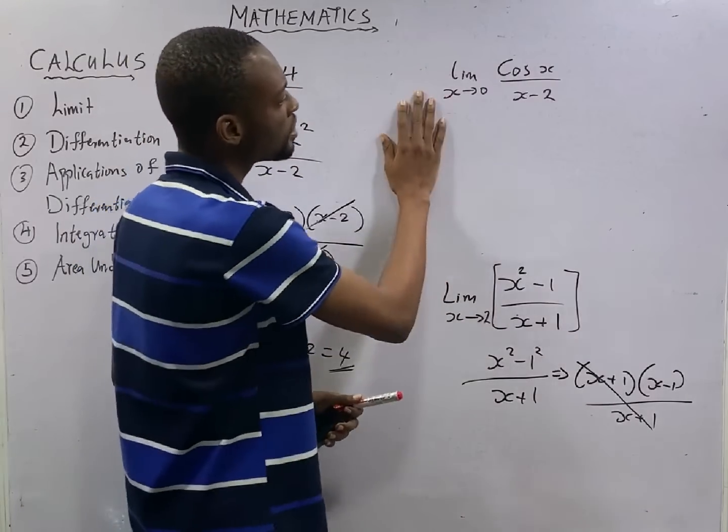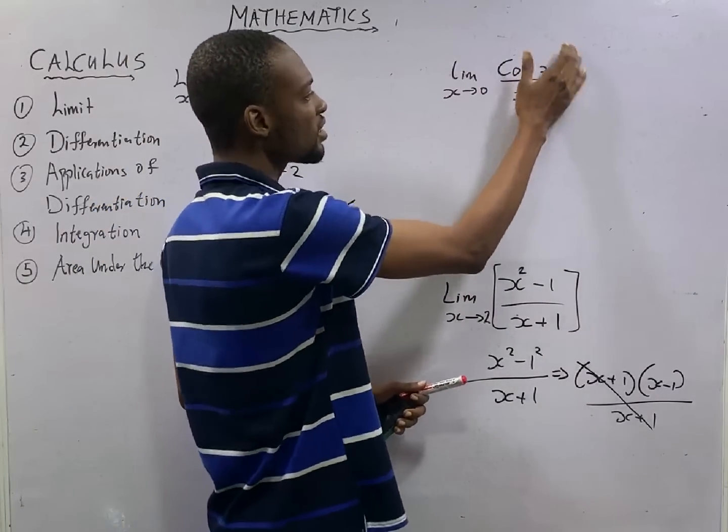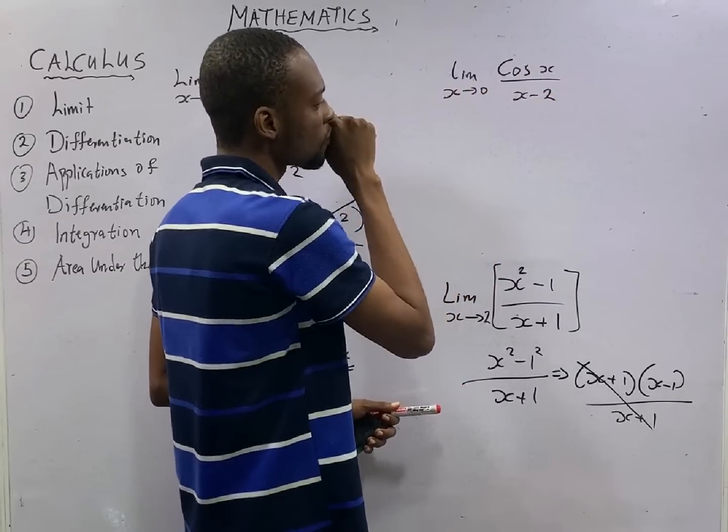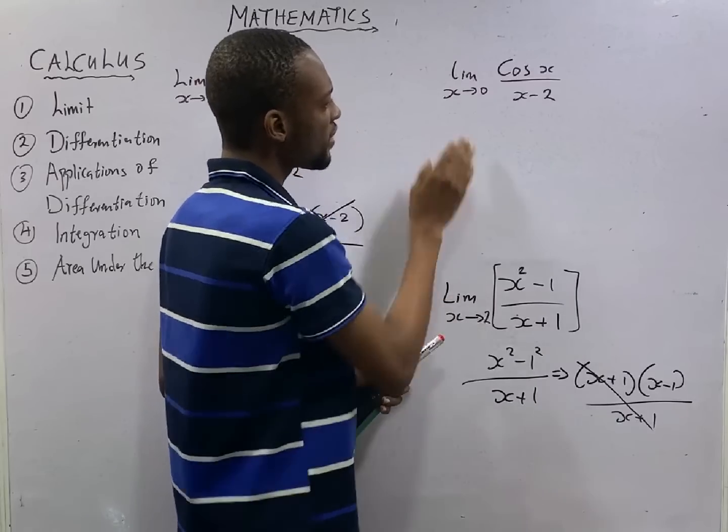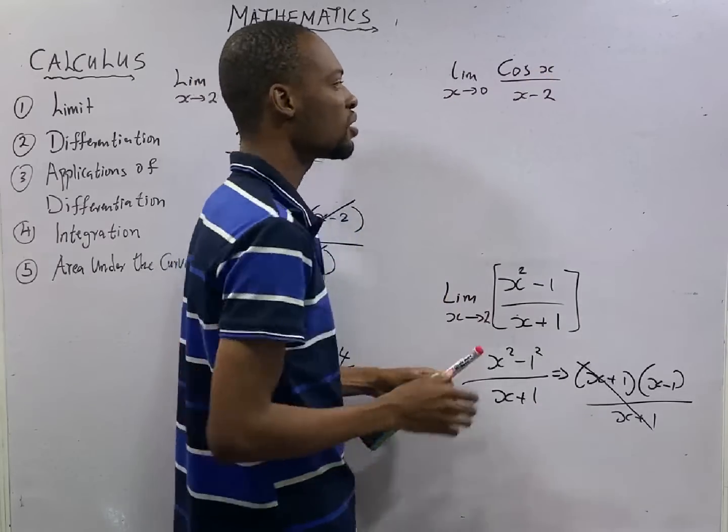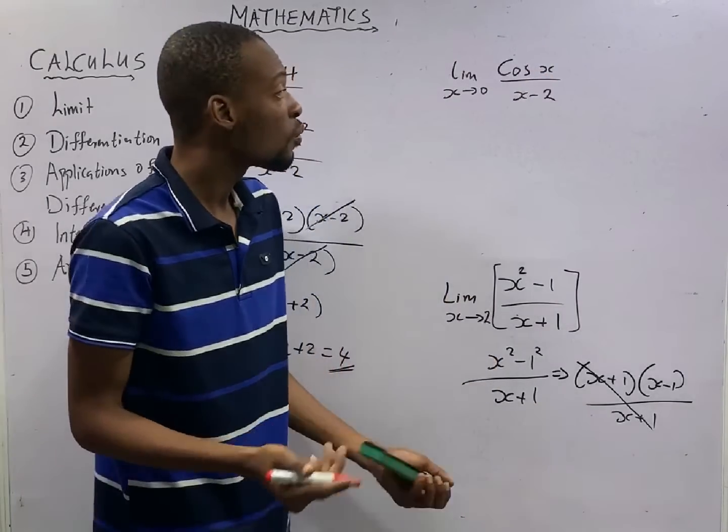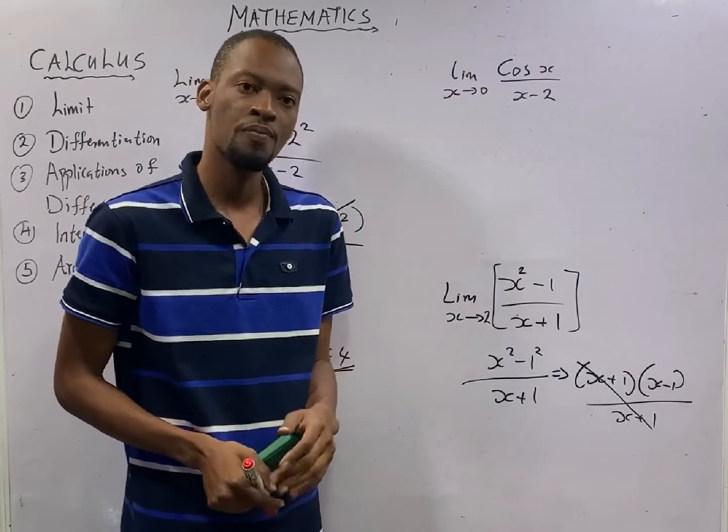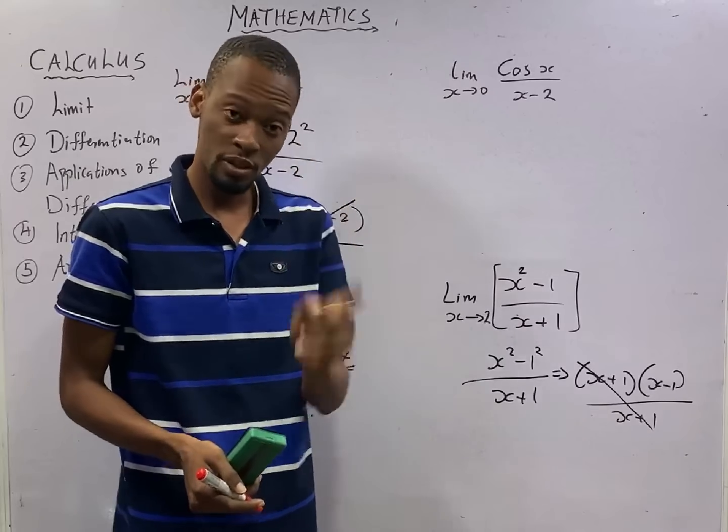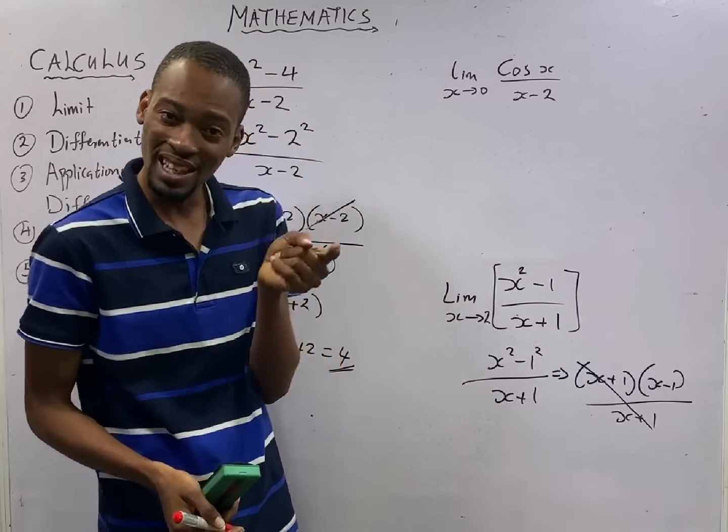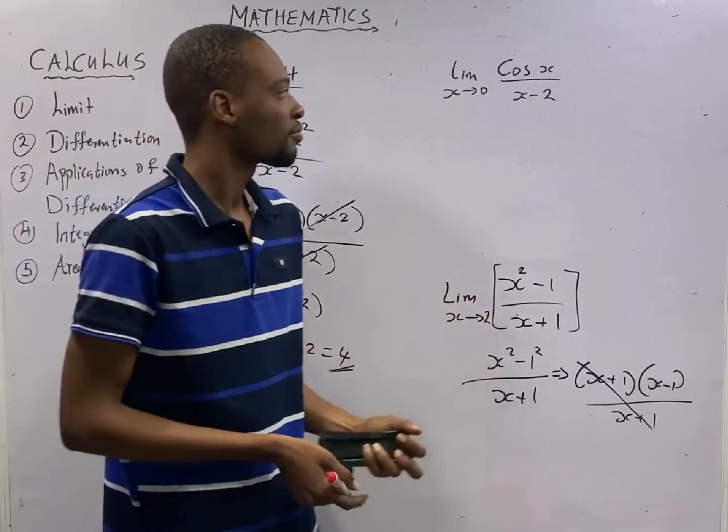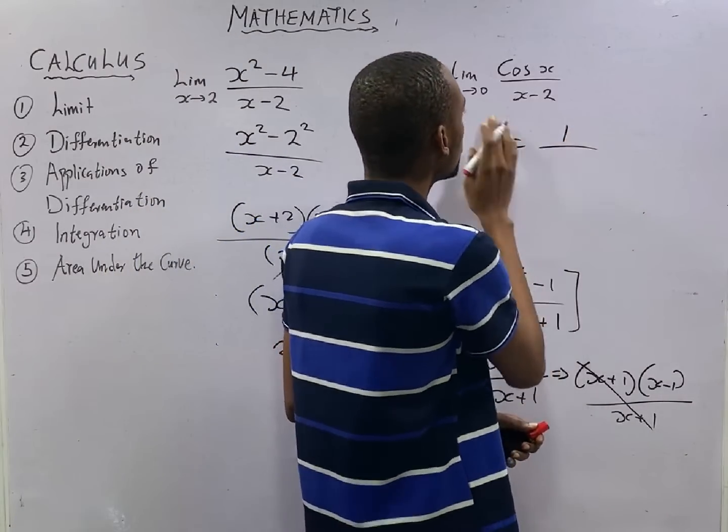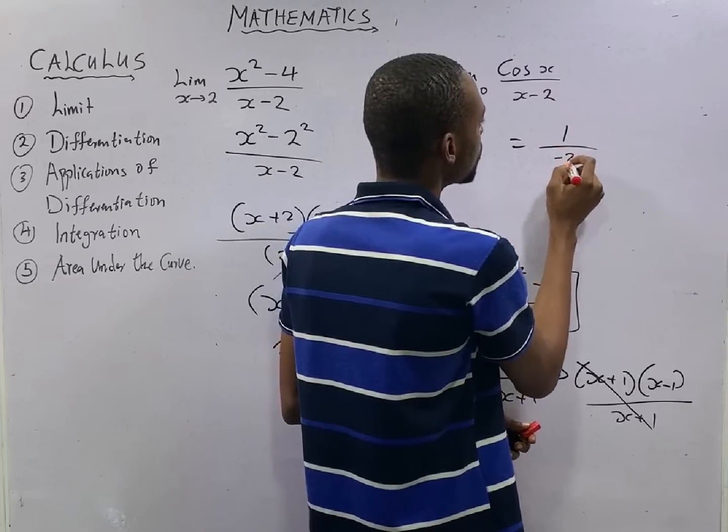Let's look at this function. We are finding the limit of cos s over s minus 2, as s tends to 0. If s is 0, what is cos 0? Cos 0 is 1. Ladies and gentlemen, if you still don't understand or know that cos 0 is 1, go and check out my trigonometry video. Please, don't skip any class. Anyway, cos 0 is 1 over 0 minus 2, that is minus 2.